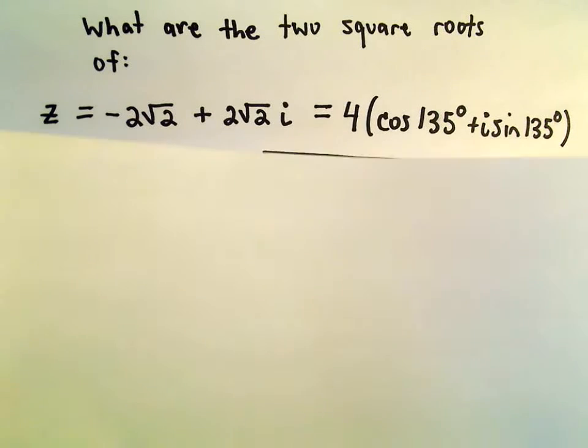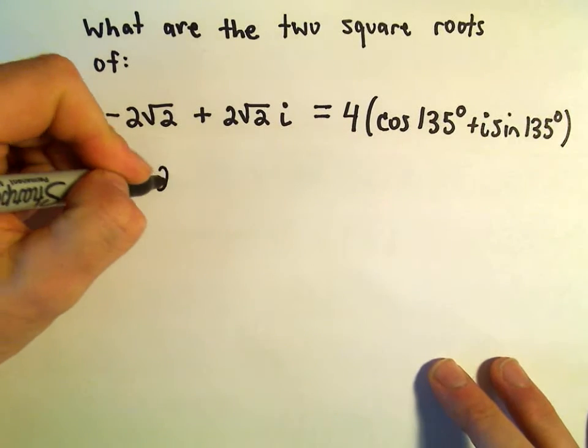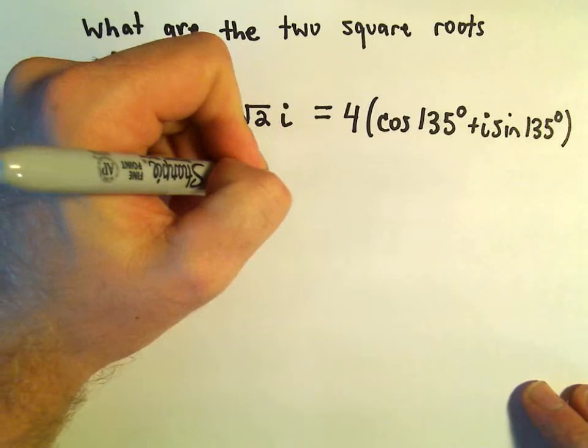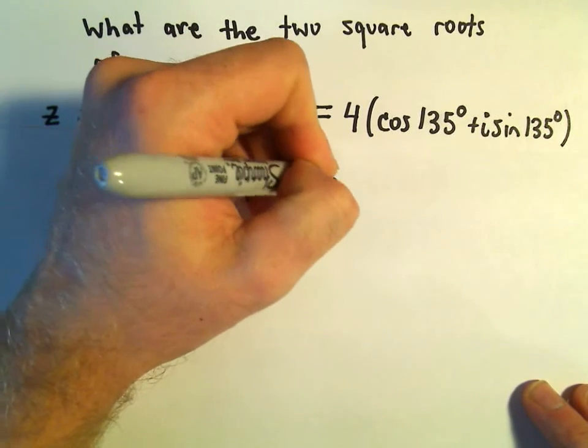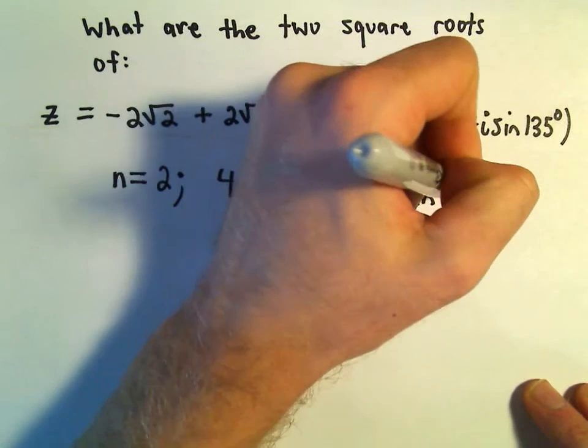Okay, so let's see. So again, we want the square roots. So since we're doing square roots, that means we're using n equals 2. And again, we're working with 4 cosine of 135 plus i sine of 135.